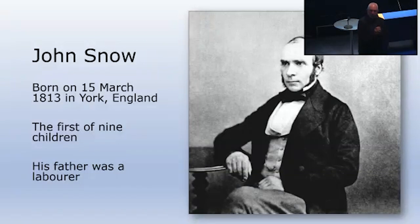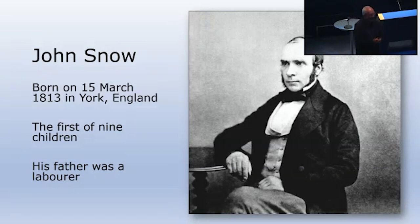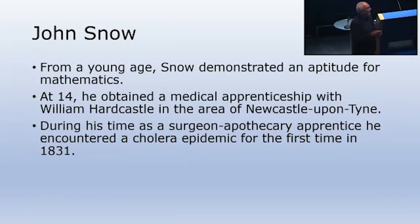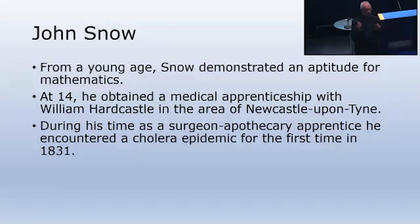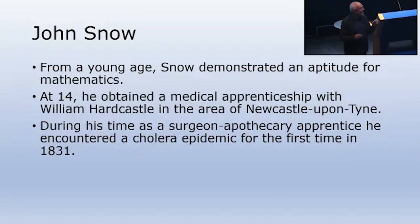John Snow was born on 15th March 1813 in York. He was the first of nine children and his father worked in a coal yard. At a very young age he demonstrated an aptitude in mathematics — very much like the engineer John McLean. His father used to take him to the fair and he could calculate the square root of 397 or 400 in his head. At 14 he obtained a medical apprenticeship with William Hardcastle in Newcastle-upon-Tyne; his mother put a small dowry towards it, spending it all on the oldest son John.